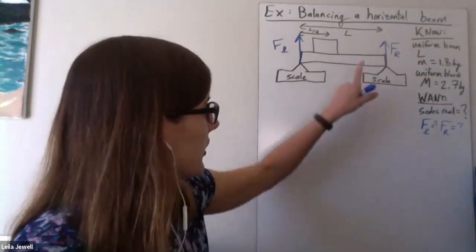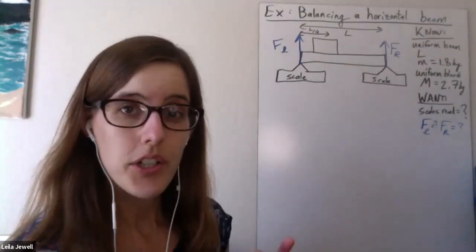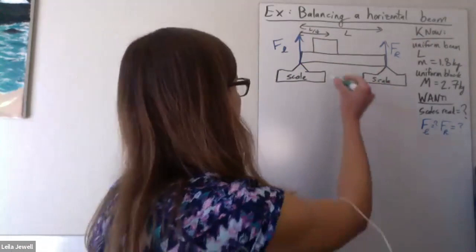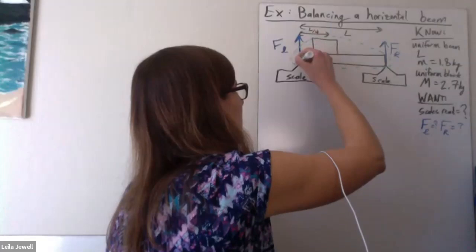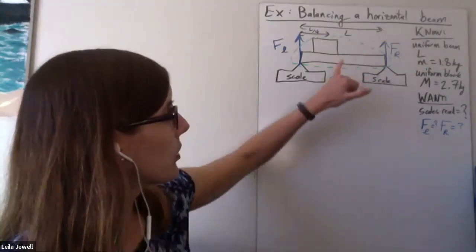Then what other forces do we have? Well, first we might want to decide what do we want to focus on as our system. I'm going to suggest that for our system, the simplest way to approach this is to treat the beam and the block together as the main focus of our system. Draw this dotted bit around here. That's our system. That means we only care about forces that are acting on the system, not any internal forces. We don't need to worry about the normal force between the beam and the block.